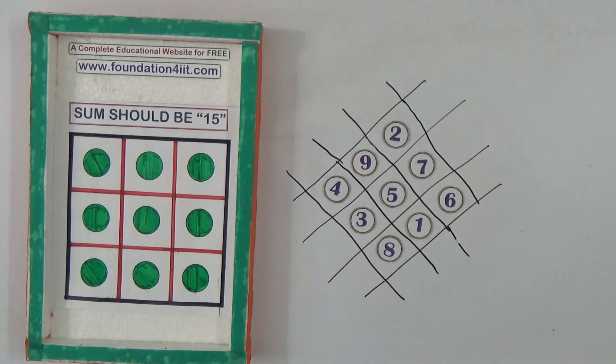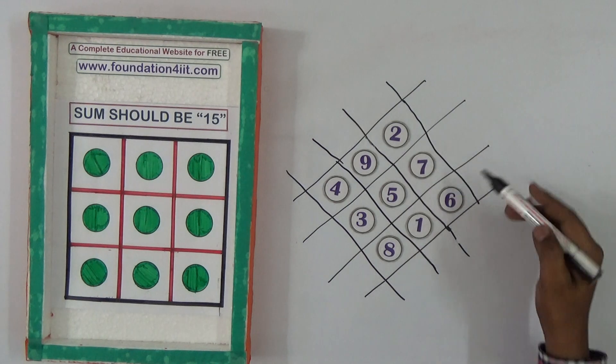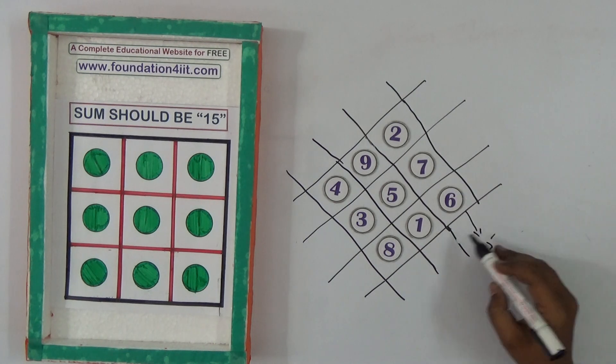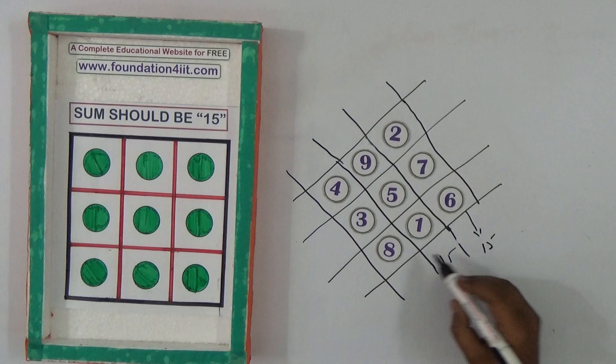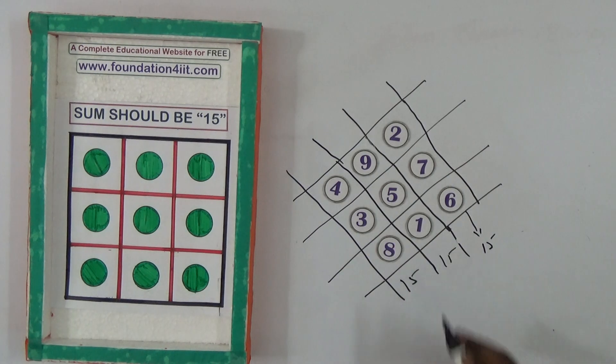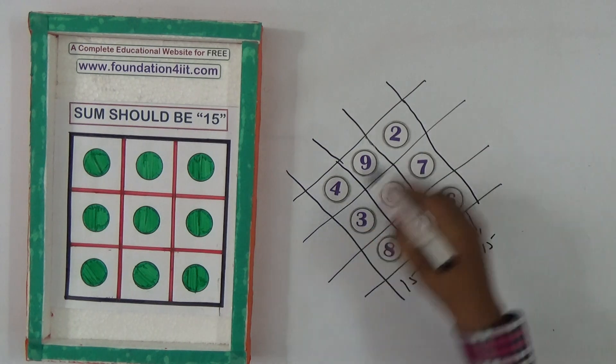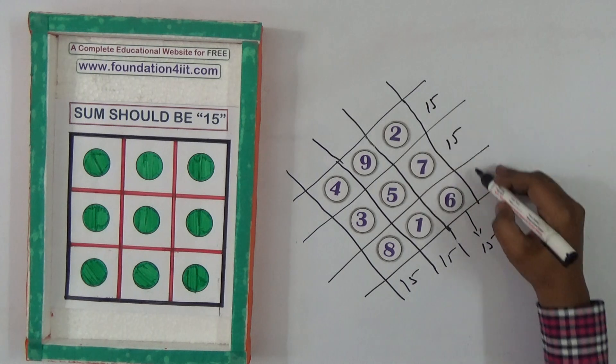Right, so you can observe, this 2 plus 7 plus 6 is 15. 9, 5, 1 is 15. 4, 3, 8 also is 15. Similarly, this is 15, 15, and 15.